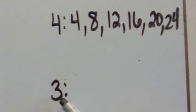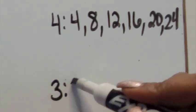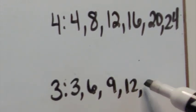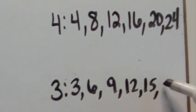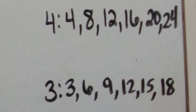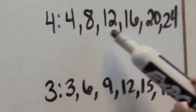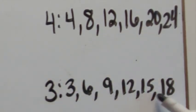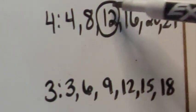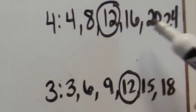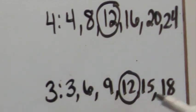We'll do the same thing for the threes: three, six, nine, 12, 15, 18. For the first six multiples of four and three, we can see that they both have 12 as a multiple in common, so we're going to go with that. If we were to go beyond 24 and 18, we would see that they have more multiples in common, and those could be used as well.